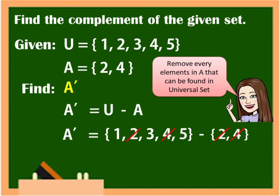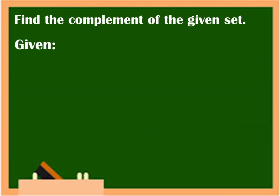So, now, what are the elements left in the universal set? Yes, 1, 3, 5. So, therefore, A complement is equal to 1, 3, 5. Easy, right? Next example.